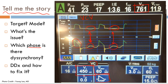When a continuous nebulizer is attached to the circuit, it generates a flow — for example, 5 liters per minute. Normally, to trigger a breath the patient needs to generate 3 L/min. But with the nebulizer adding 5 L/min, the patient must generate 3 + 5 = 8 liters per minute to surpass the threshold, which is extremely difficult. So the fix is to decrease the trigger threshold while the patient is on the continuous nebulizer, or switch the trigger variable from flow to pressure, which will alleviate the problem.